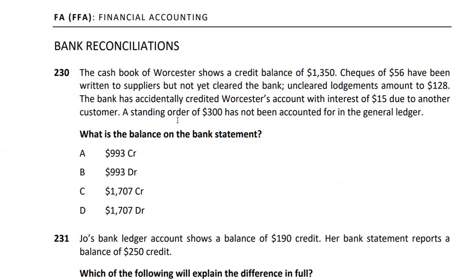A standing order is a regular monthly expense. We give the bank standing instructions to deduct a set amount from our account every month automatically. It works like an automated payment from our bank account.